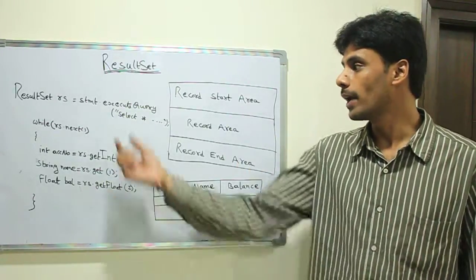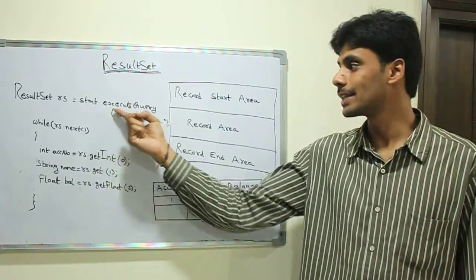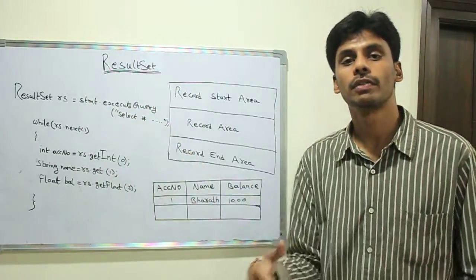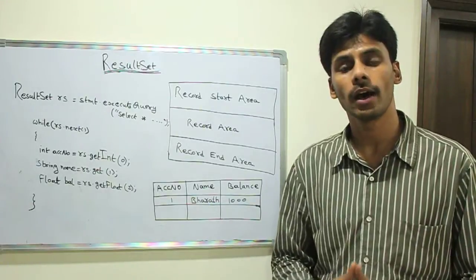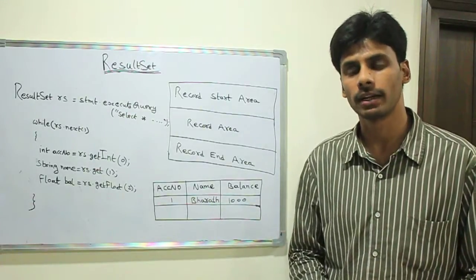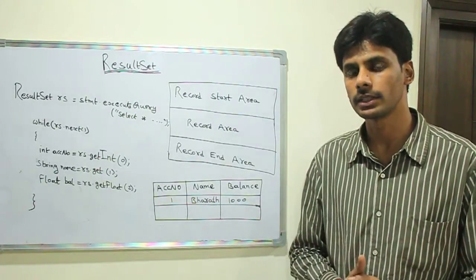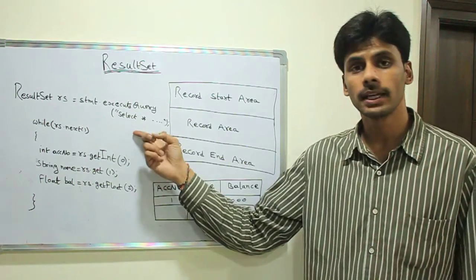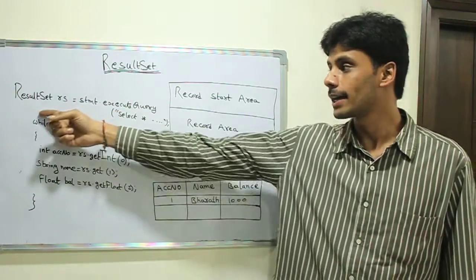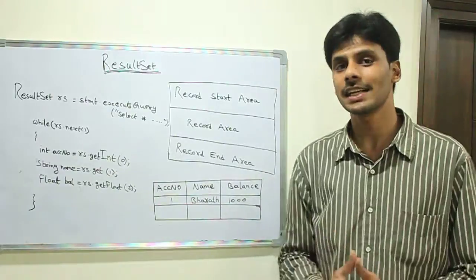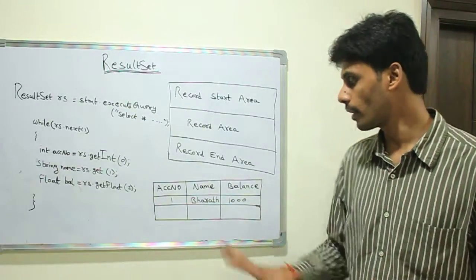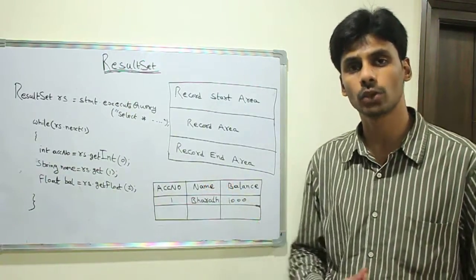For an update, you would have used executeUpdate for insert, update, and delete statements. The executeQuery method returns a ResultSet. So a ResultSet is nothing but an object representation of your database table or the database rows.